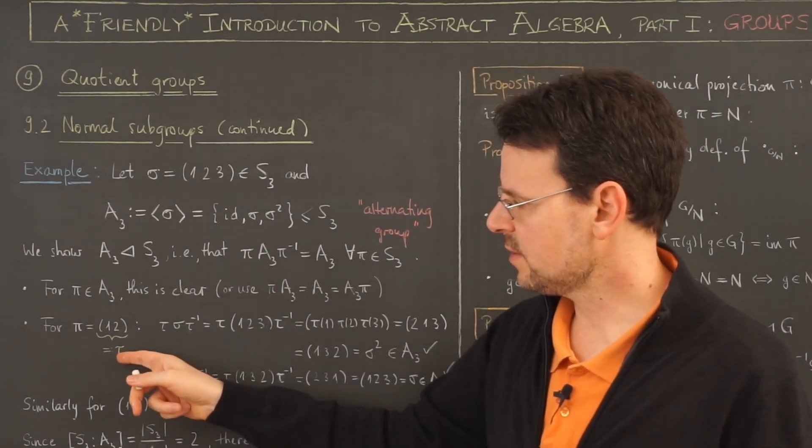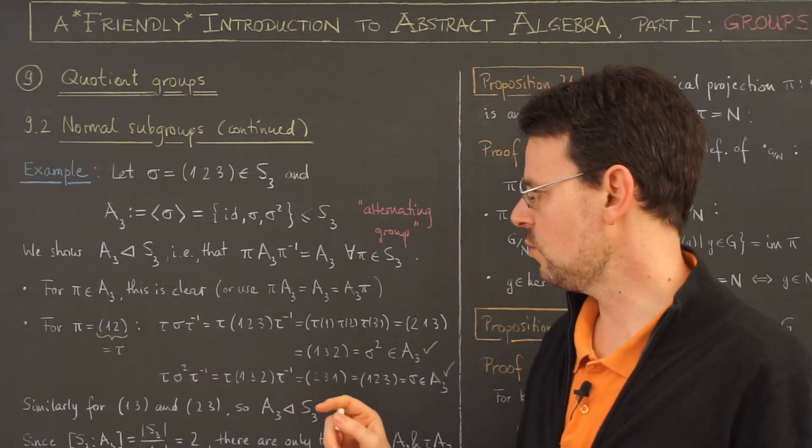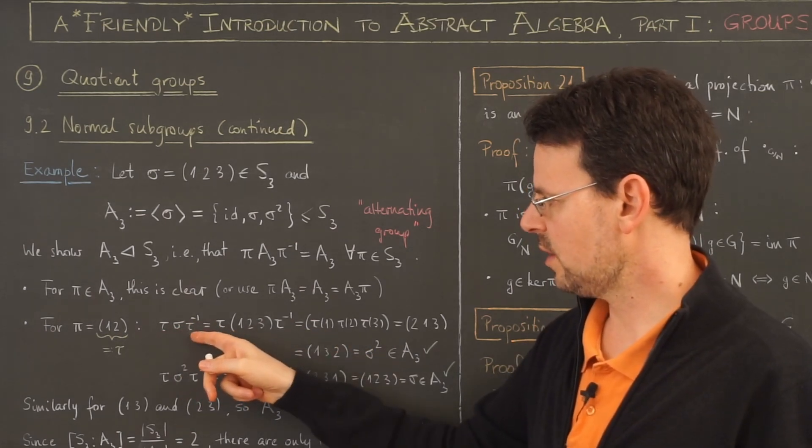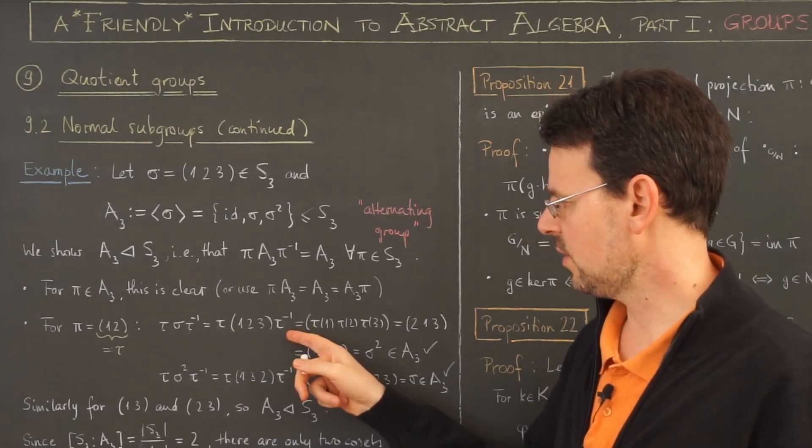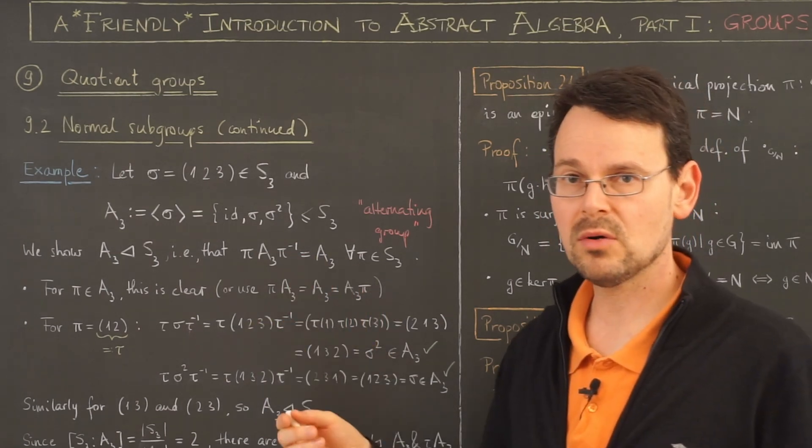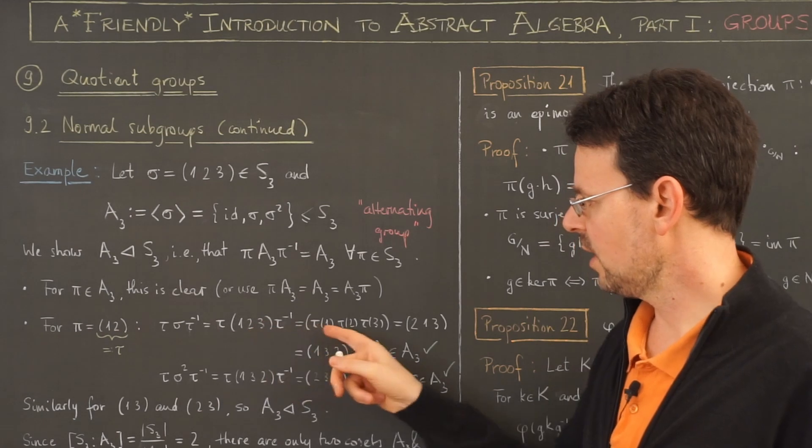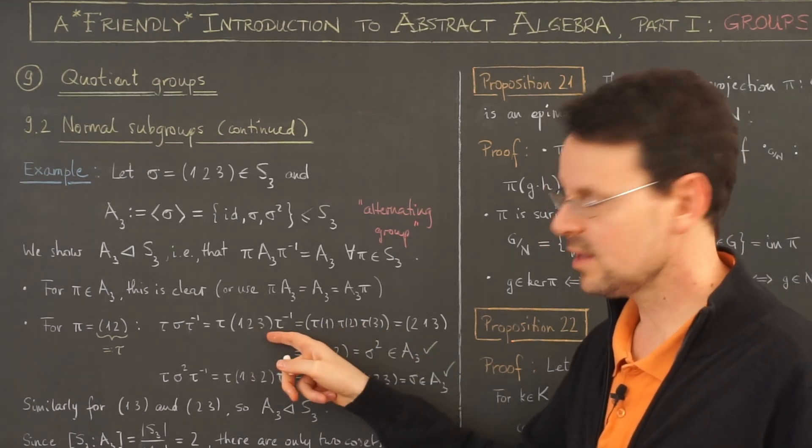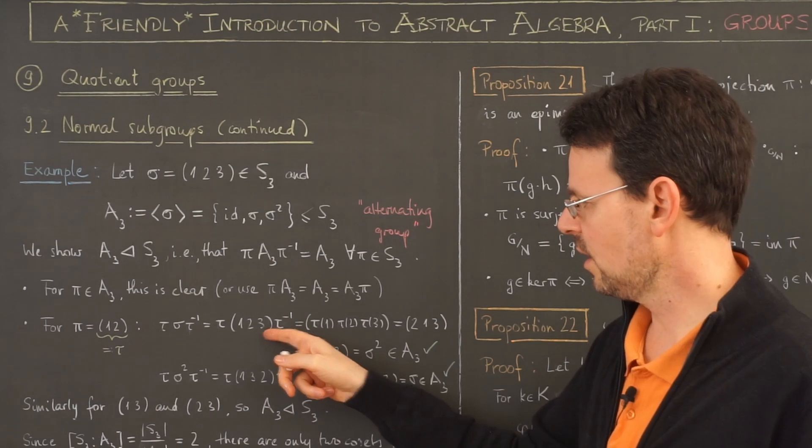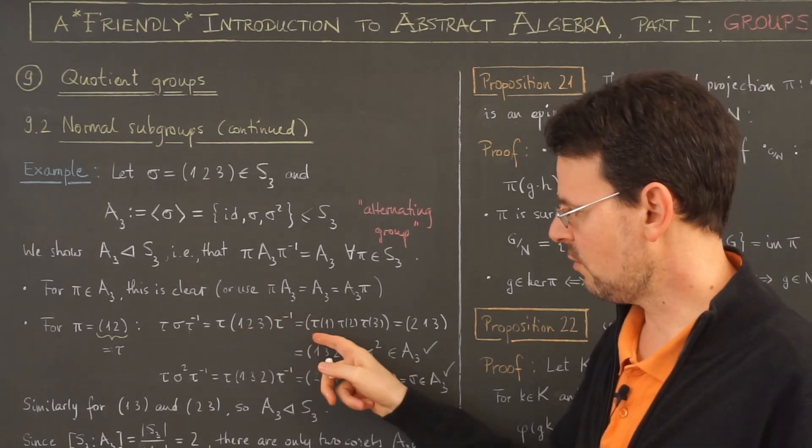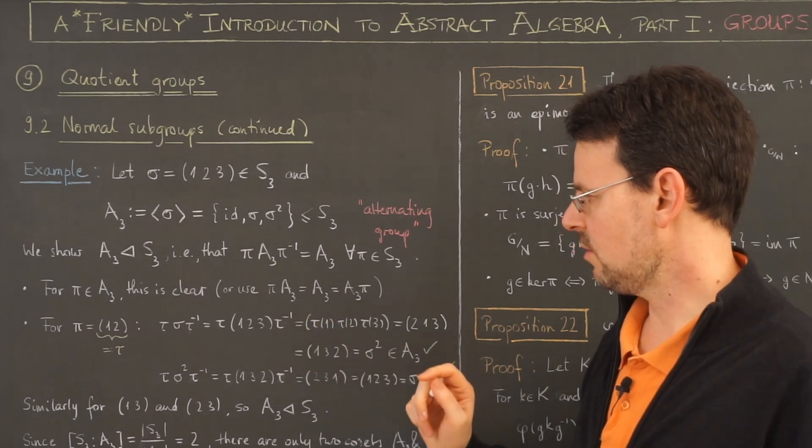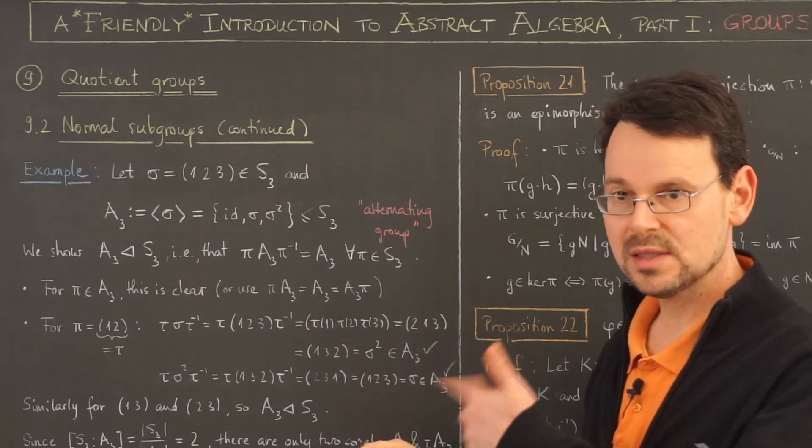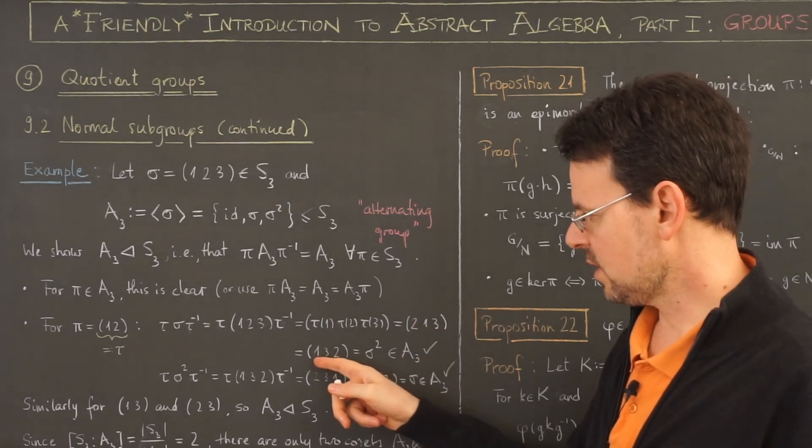So for example I take this transposition here (1,2) which simply switches 1 and 2, and then I indeed do the calculation: tau sigma tau inverse is tau, then here is sigma, then tau inverse. A long time ago when we talked about Sn, the symmetric group, we proved that conjugating by a permutation is the same as this here. I take the same cycle structure, in this case a three cycle, and then instead of 1 I write tau of 1, instead of 2 I write tau of 2, and instead of 3 I write tau of 3, and this clearly gives me (2,1,3), which by cyclic permutation can be seen to be the same as (1,3,2), which is sigma squared.